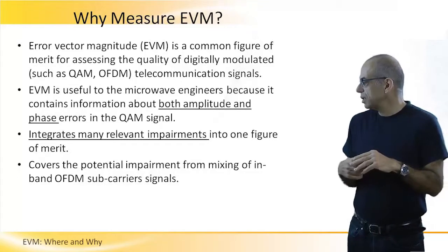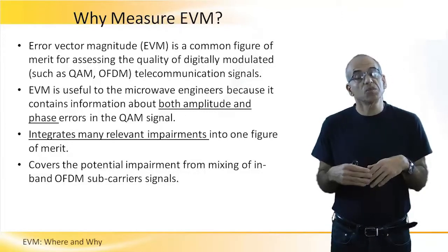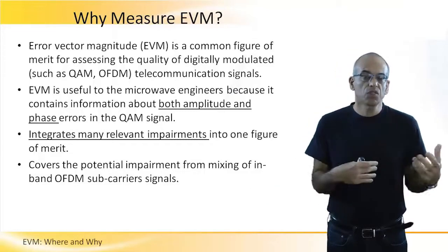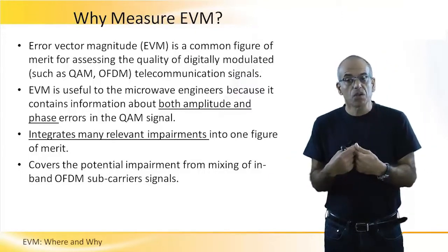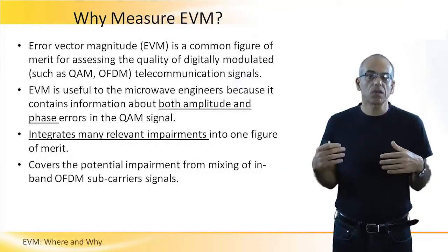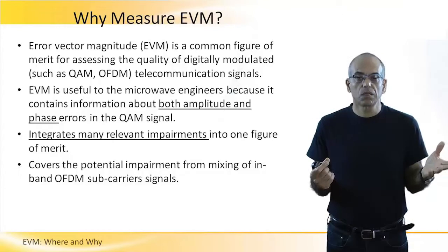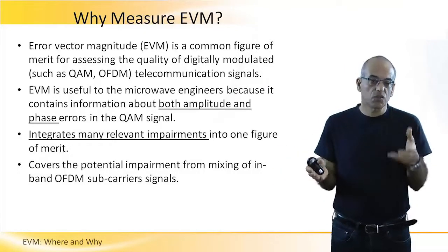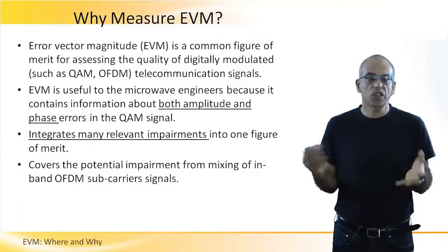The last point is that EVM covers the potential impairment from mixing of the in-band subcarriers themselves. It's not only blockers, spurs, or noise figure from external sources, or phase noise - the subcarriers themselves can impair each other. A simple way to understand this is to think about peak-to-average ratio created by the different subcarriers. If the system is not linear enough, the different subcarriers actually impair each other.